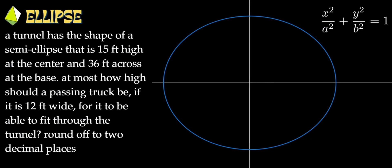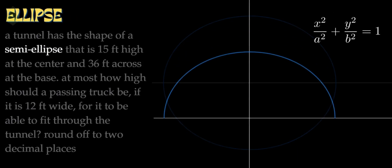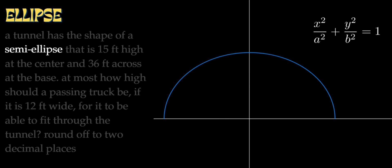Now let's start the main question. The question is: the tunnel has the shape of an ellipse, meaning it is more than two-dimensional. Because the tunnel is below, you can see the tunnel is below. Let's start the question — we have an ellipse.